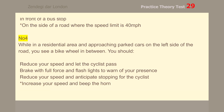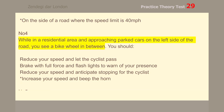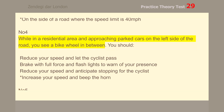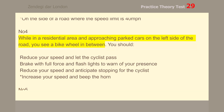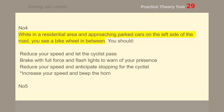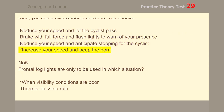Number 4. While in a residential area and approaching parked cars on the left side of the road, you see a bike wheel in between. You should increase your speed and beep the horn.